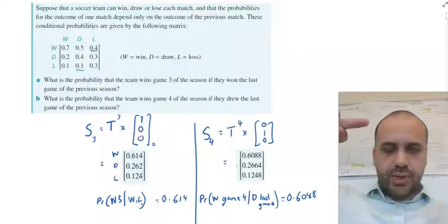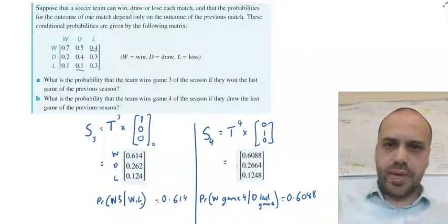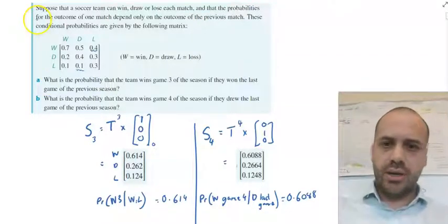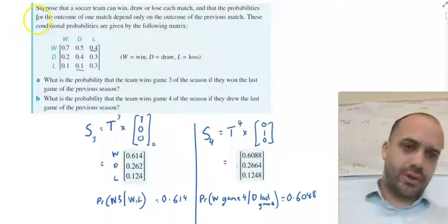These Markov chains can get bigger and bigger and bigger and bigger. There's no end to the number of states we can have on either side, but there's an example of a 3 by 3.